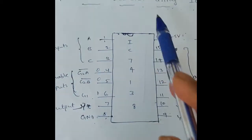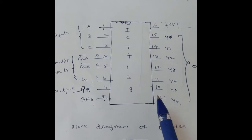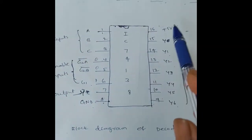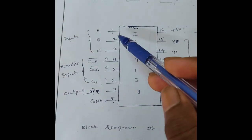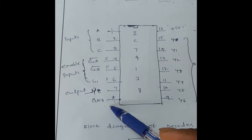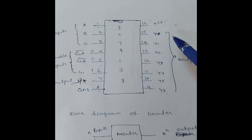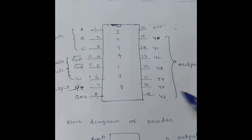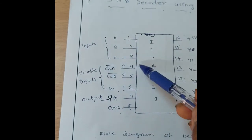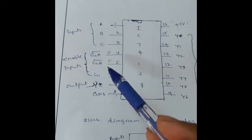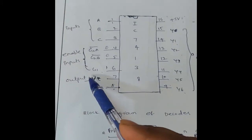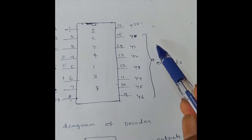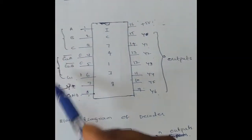This is the IC74138 pin diagram — that is the 3-to-8 decoder IC. It has a total of 16 pins. The 8th pin is ground and the 16th pin is the supply. These are the output lines. Pin numbers 1, 2, 3 are the inputs, and pins 4, 5, 6 are the enable inputs. The 7th pin is output Y7. Y0 to Y7 are the outputs.